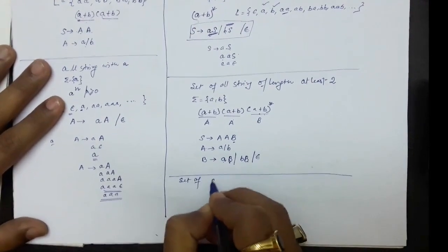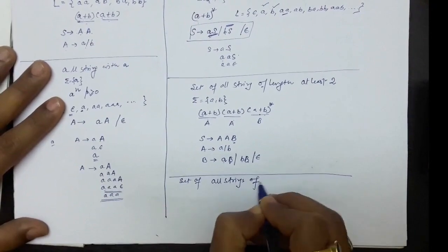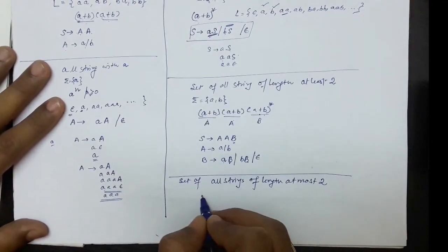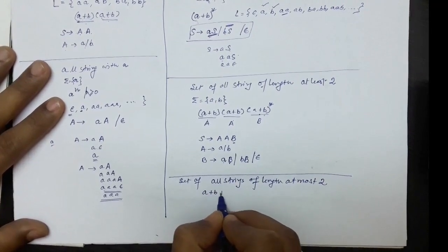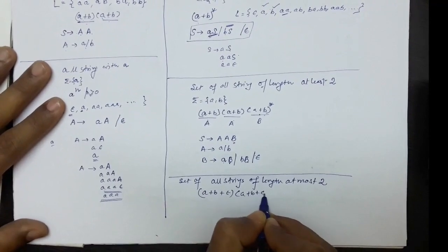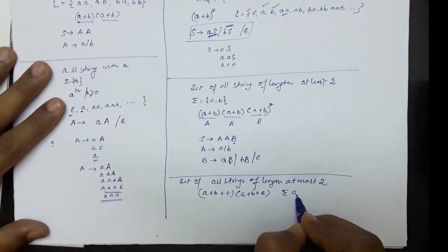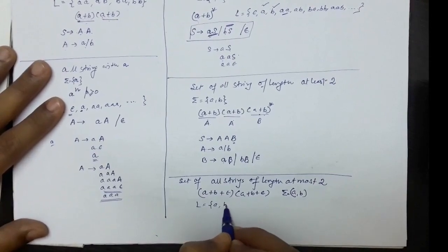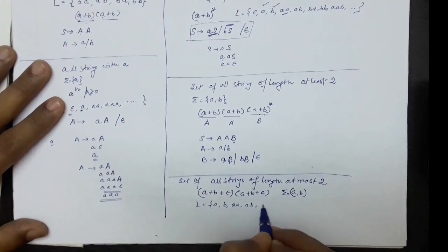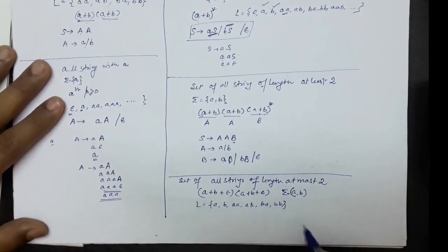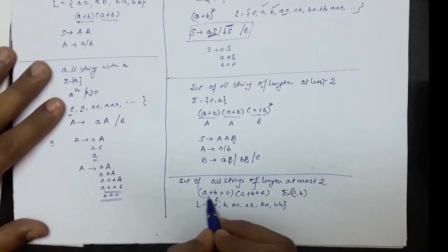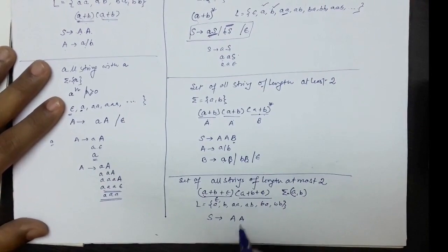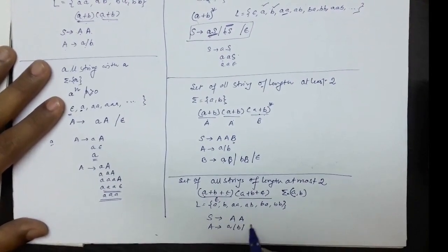For the set of all strings of length at most two over {a, b} — not more than two — the regular expression uses (a|b|epsilon)(a|b|epsilon). The grammar is: S → AA, where A → a | b | epsilon. Both positions can independently be a, b, or epsilon, covering strings of length zero, one, or two.